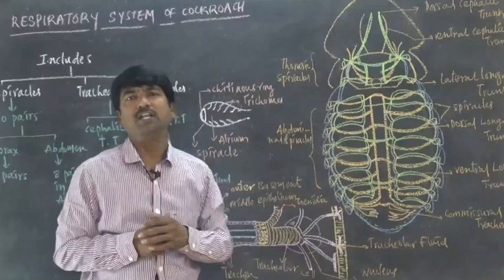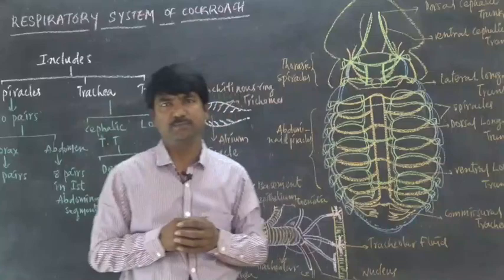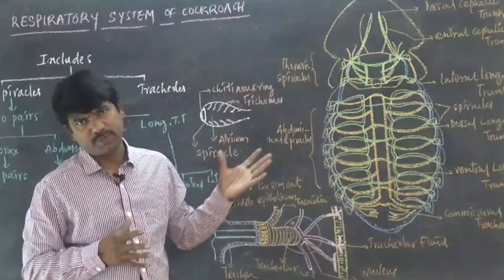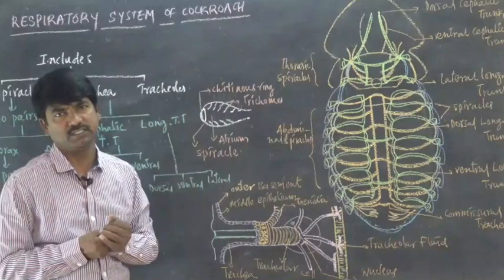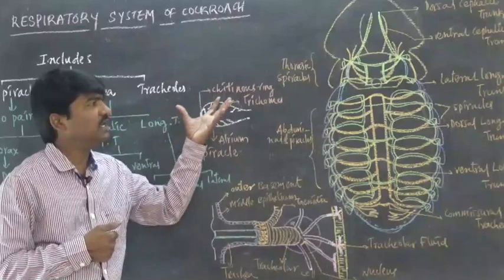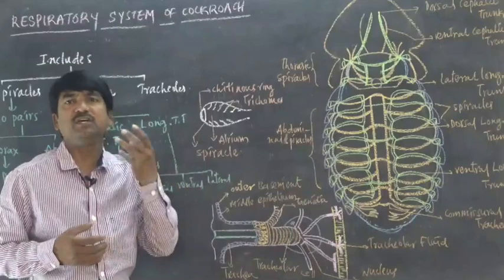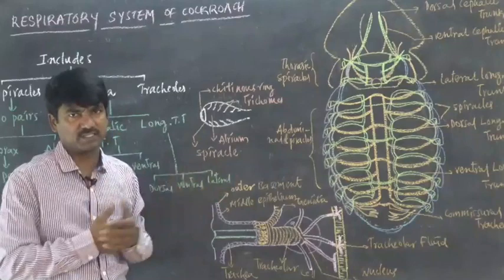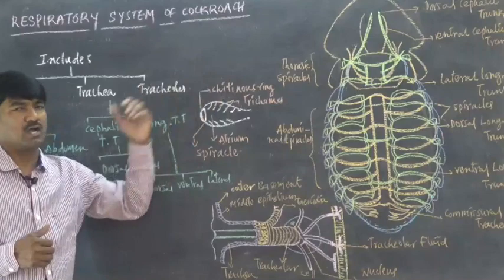Spiracles also exhibit two specific conditions: polyneustic condition and holoneustic condition. Polyneustic means many spiracles are present. Holoneustic means all spiracles completely participate in the respiration process. During intake of oxygen, thoracic spiracles are kept open, whereas during release of carbon dioxide, thoracic spiracles are kept closed and abdominal spiracles are kept open. Both sets of spiracles participate, hence the polyneustic and holoneustic conditions.